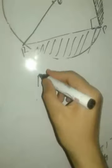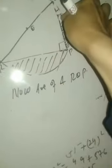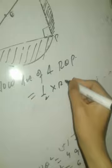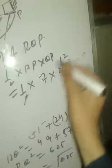Now, the area of triangle RQP. Since this triangle is right-angled, the area equals (1/2) × base × corresponding altitude. We write: area = (1/2) × RP × QP = (1/2) × 7 × 24 = 84 square centimeters. So we have found the area of this triangle.